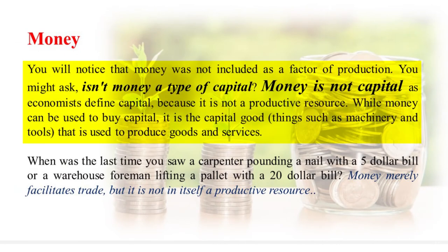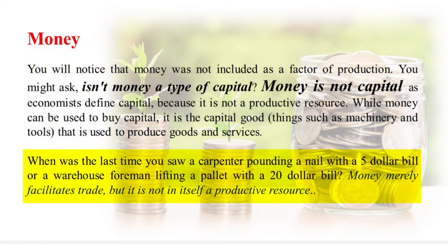You will notice that money was not included as a factor of production. You might ask: isn't money a type of capital? Money is not capital, as economists define capital, because it is not a productive resource. While money can be used to buy capital, it is the capital goods — things such as machinery and tools — that are used to produce goods and services. When was the last time you saw a carpenter pounding a nail with a $5 bill, or a warehouse foreman lifting a pallet with a $20 bill? Money merely facilitates trade, but it is not, in itself, a productive resource.